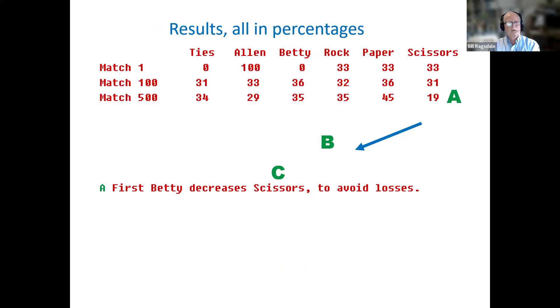This is a history, now, of gameplay. In the match number one, we see that Alan won that with a probability of 100%. And at that point, Betty's strategies are the last three columns. So in the rock, paper, scissors, last three columns, Betty's strategy, and currently, it's 33% for each of the choices.